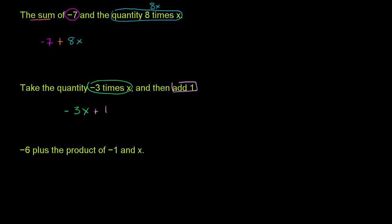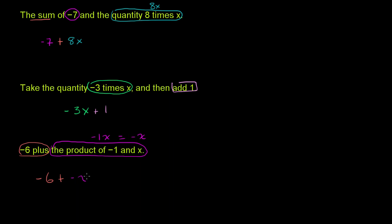Now this one: negative 6 plus the product of negative 1 and x. The product of negative 1 and x is just negative 1x, which is the same thing as negative x. So we can write this as negative 6 plus negative x, or equivalently, negative 6 minus x. And we are done.